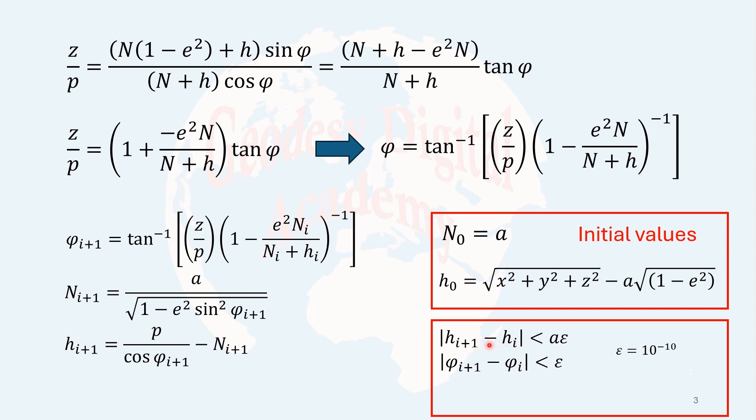Either we can use the condition for h or the height or for the phi. And epsilon is normally considered to be 10 to the power minus 10. Then the difference between the last two phi or the last two height, the absolute value, is smaller than a times epsilon. Or the phi minus the previous phi absolute value is smaller than epsilon. We can stop iteration. So we consider the solution is converged.